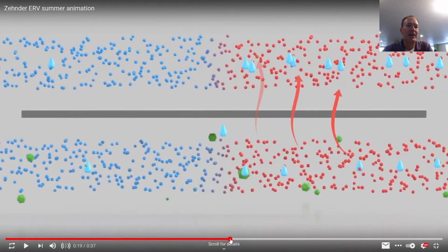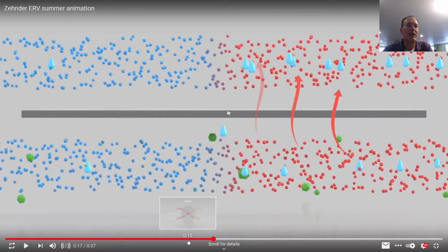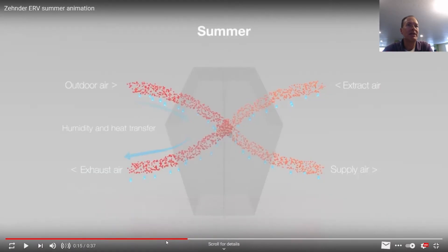Because in an HRV, whatever is coming in is pretty much all of the outside humidity. So if there's a thirty percent delta, then most of the humidity will be dropped down the drain.